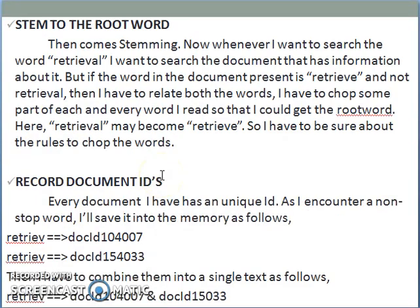The third step is to stem to the root word. Whenever you want to search the word 'retrieval', you want to find documents that have information about it. But if the word in the document is 'retrieved' and not 'retrieval', you have to relate both words. You chop some part of each word you read so that you get the root word — here 'retrieval' may become 'retrieve' — so you have to be sure about the rules to chop the words.